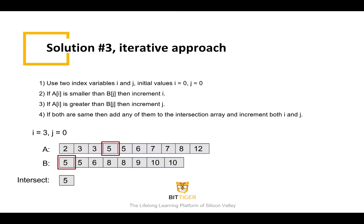Now i is equal to three, and j is still equal to zero. A of three is equal to five, and B of zero is equal to five. Five equals five, so five is one element that is contained in both arrays. We add this element to the intersection array. Then we increment both i and j.